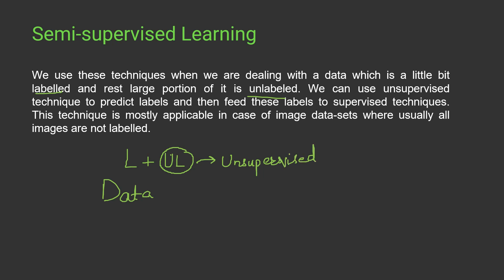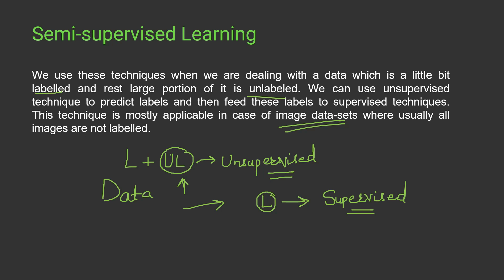Using the unsupervised technique, we predict the labels for the unlabeled data. After predicting these labels, the entire dataset becomes labeled, and on this fully labeled dataset we apply supervised learning. That's why it's called semi-supervised — for one part we apply unsupervised, and for the remaining we apply supervised learning. The major use of this technique is in image datasets, which are so large and raw that some images are labeled and some are not, so semi-supervised learning is applied.